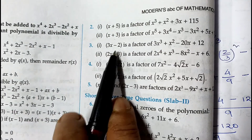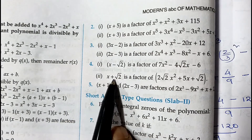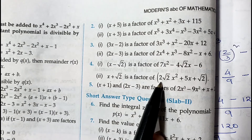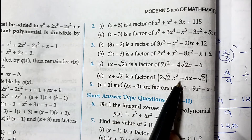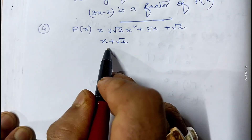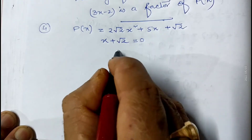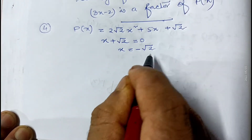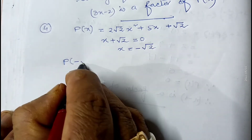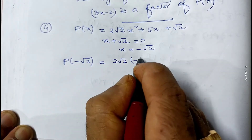Let me show the second part of question number 4. We have to prove that x plus root 2 is a factor of 2 root 2 times x squared plus 5x plus root 2. This is the polynomial, and we make x plus root 2 equal to 0, so x equals minus root 2. We replace minus root 2 in the polynomial: p(minus root 2) equals 2 root 2 times (minus root 2) squared plus 5 times (minus root 2) plus root 2.